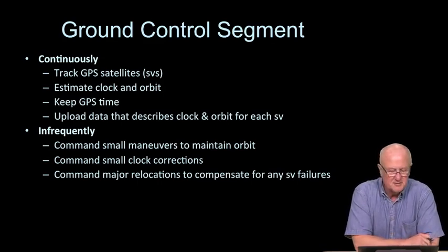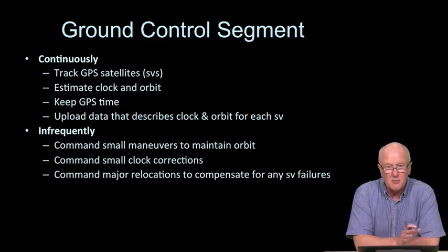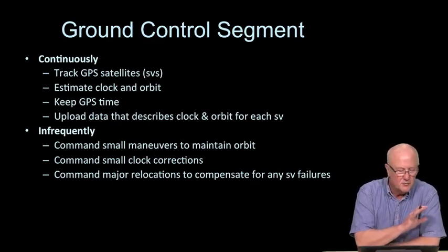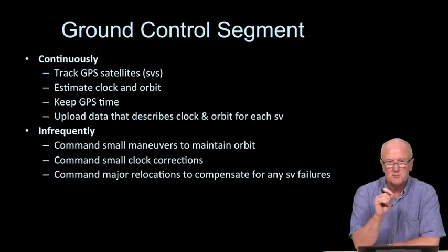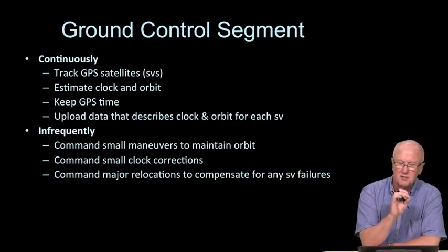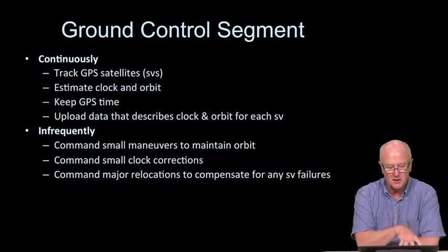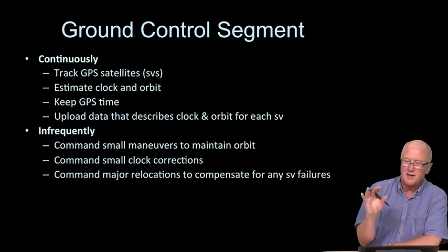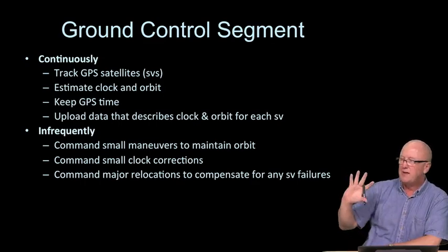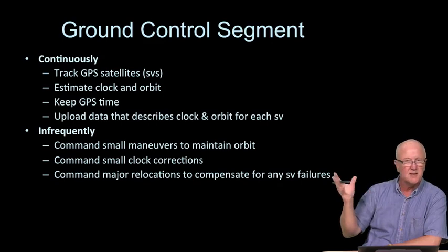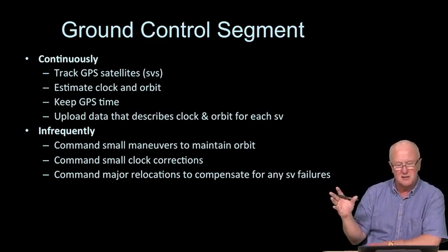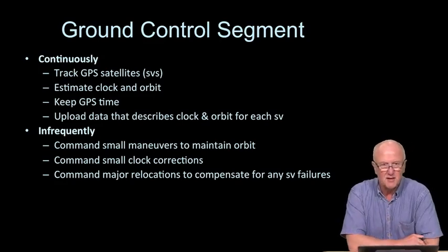Also, on a very infrequent basis, the ground control segment might actually command corrections to the physical clock on board the satellites. That's done very infrequently. Nominally, what we do is we just send some information up to the satellite that describes the offset in time between satellite time and GPS system time. So that information is included digitally rather than as a physical adjustment of the clock. And then finally, on an even more infrequent basis, the ground control segment might command a major relocation of a satellite. So if we had an unexpected failure of a satellite in an orbit, we may have to move one or more of the other satellites in that same orbit to compensate for the loss of that satellite.